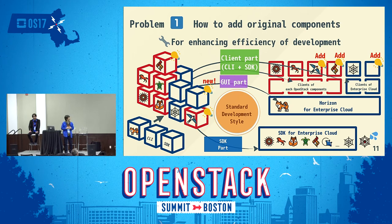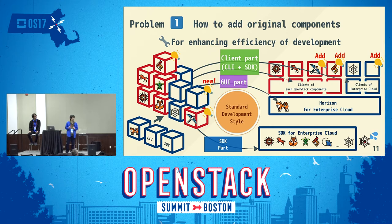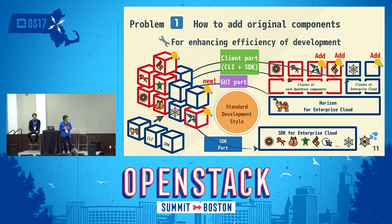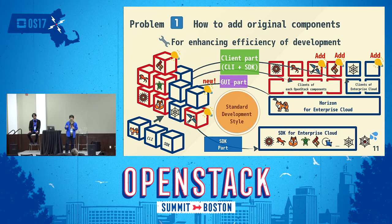The first development part is the client part — for example, if the component is Nova, the client part means the Python Nova client, which usually includes CLI and SDK inside it. The next development part is the GUI part, meaning Horizon. We usually use the SDK inside the client as the API execution logic from the GUI. The third development part is a dedicated SDK like the Python OpenStack SDK. In the Nova case, we need to add Nova functions into this SDK part as well. But in this style, we need to add almost the same function into two separate parts — the client's inside SDK and the dedicated SDK — so we looked for a way to unify them.